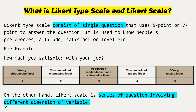So this is a Likert type scale, where with only one question the researcher collects data. On the other hand, a Likert scale is a series of questions involving different dimensions of a variable. For example, instead of only one question about job satisfaction, there are series of questions related to working hours, working time, salary, behaviour of the boss, and professional growth — each category may have multiple questions.